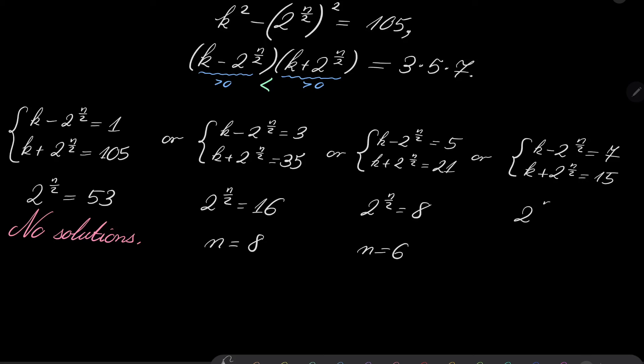Or, the last case, 2 to the power of n over 2 equals 8. Sorry, not 8, but 4. So, n equals 4.